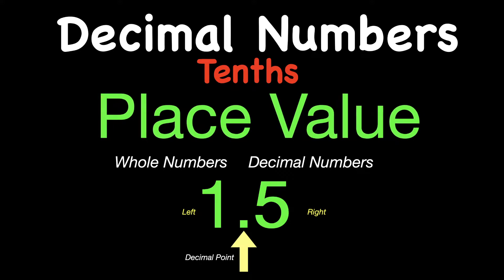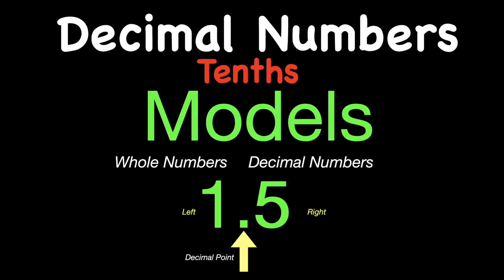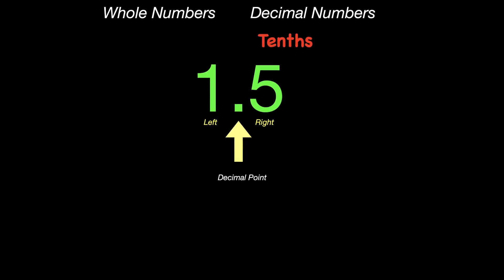We're going to be discussing place value for a little bit, how to read tenths in numbers, and then some models. You would read that number as 1 and 5 tenths. On the left side, the 1 would represent 1 whole. On the right, that's a fraction of 5 tenths.